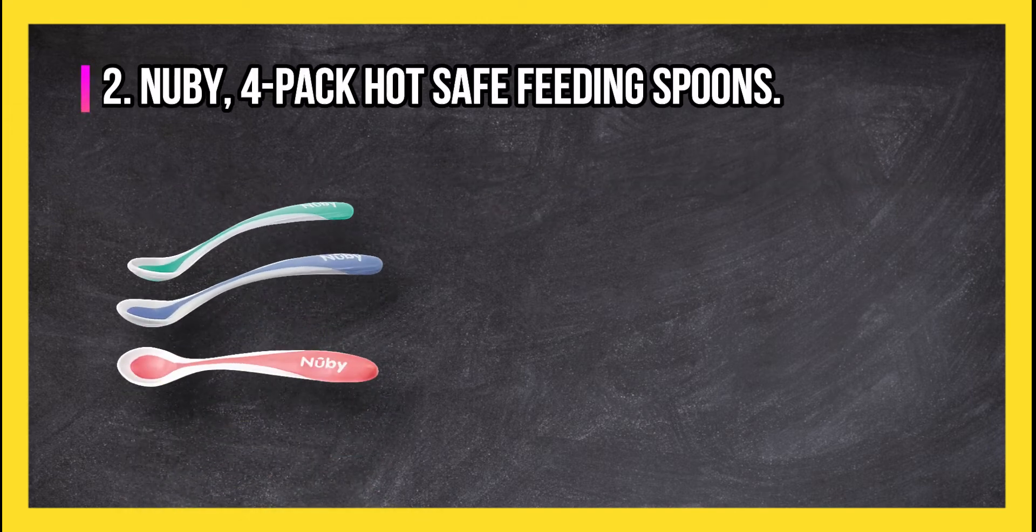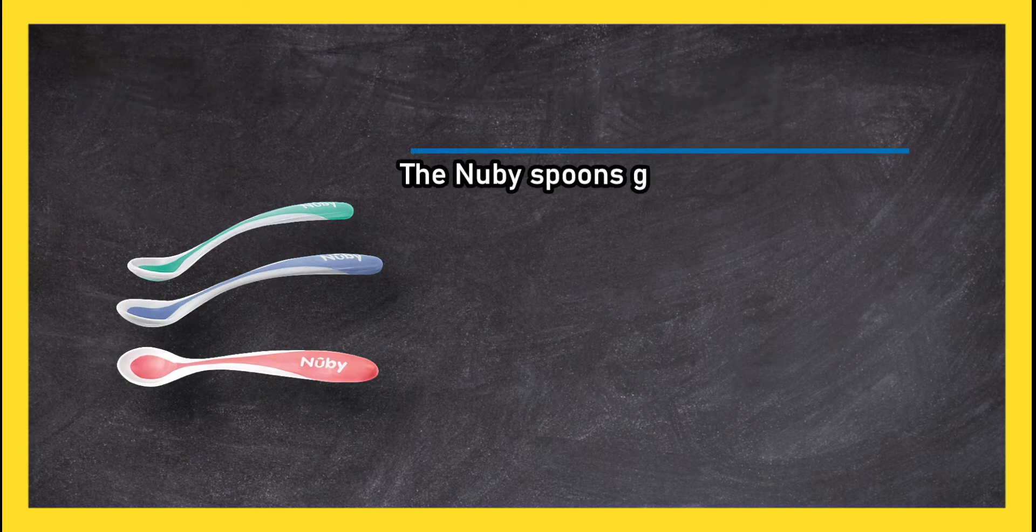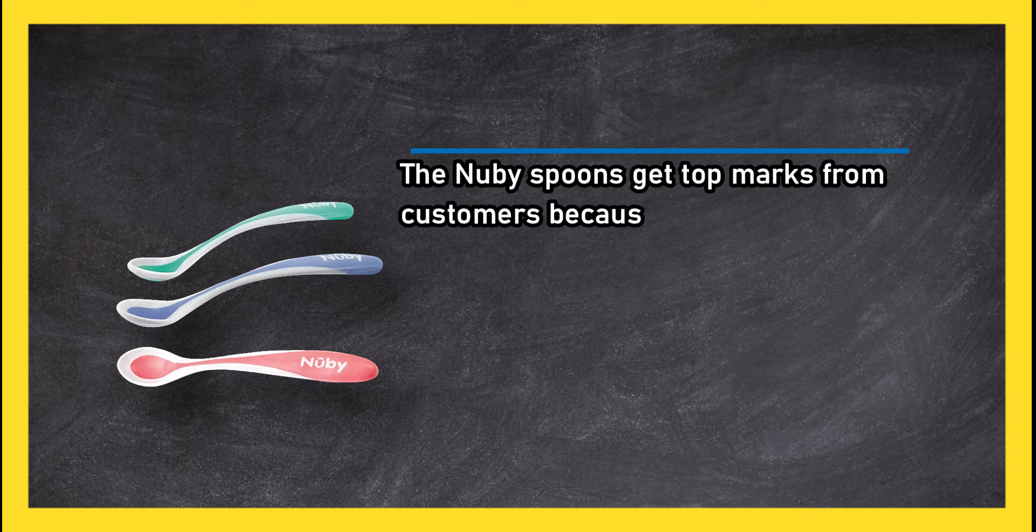At number two: Nuby Four Pack Hot Safe Feeding Spoons. The Nuby spoons get top marks from customers because of their soft gentle shape and decent size that holds a good amount of food.